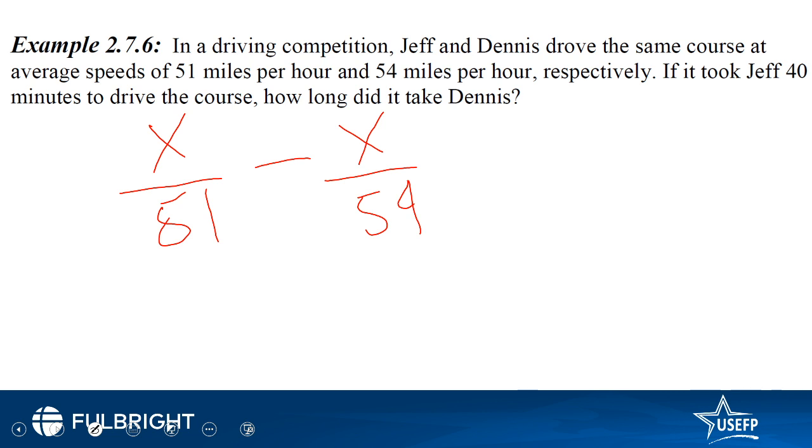The difference between the two is in the form of hours, so x over 51, the answer would be in hours, so 40 divided by 60 is the difference between the two times. We have to find how long Dennis took, so we have to find x over 54. If we just find x first, 54 into 51.